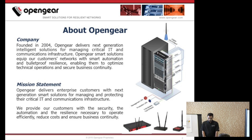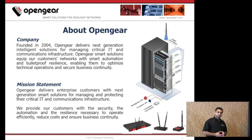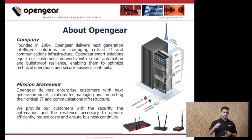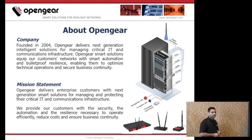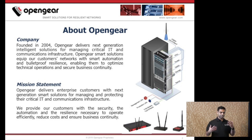Who is OpenGa and what do we do? OpenGa develops intelligent solutions for managing critical IT and communications infrastructure. We were founded in 2004. Our headquarters is in Sandy, Utah. We also have an office in New Jersey, where I'm based. Rob is based out of the London office, and we also have an engineering team in Brisbane, Australia. As you can see, we are a global company.